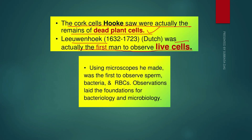Anton van Leeuwenhoek was actually the first man to observe live cells. He made his own simple microscope and first observed sperm cells, bacteria, and red blood cells. He termed the bacteria 'animalcules' in a letter he sent to the Royal Society in 1683. Through his observations, we first came to know about bacteriology and microbiology, which is why Leeuwenhoek is known as the father of microbiology.